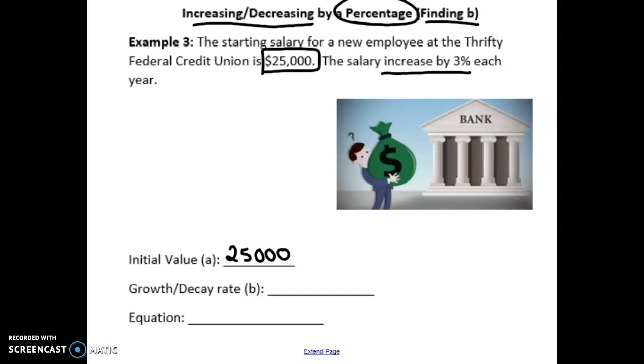So in order to find out what our B value is, we know that we're increasing by 3%. If you see the word increase, that means we're going to be adding.